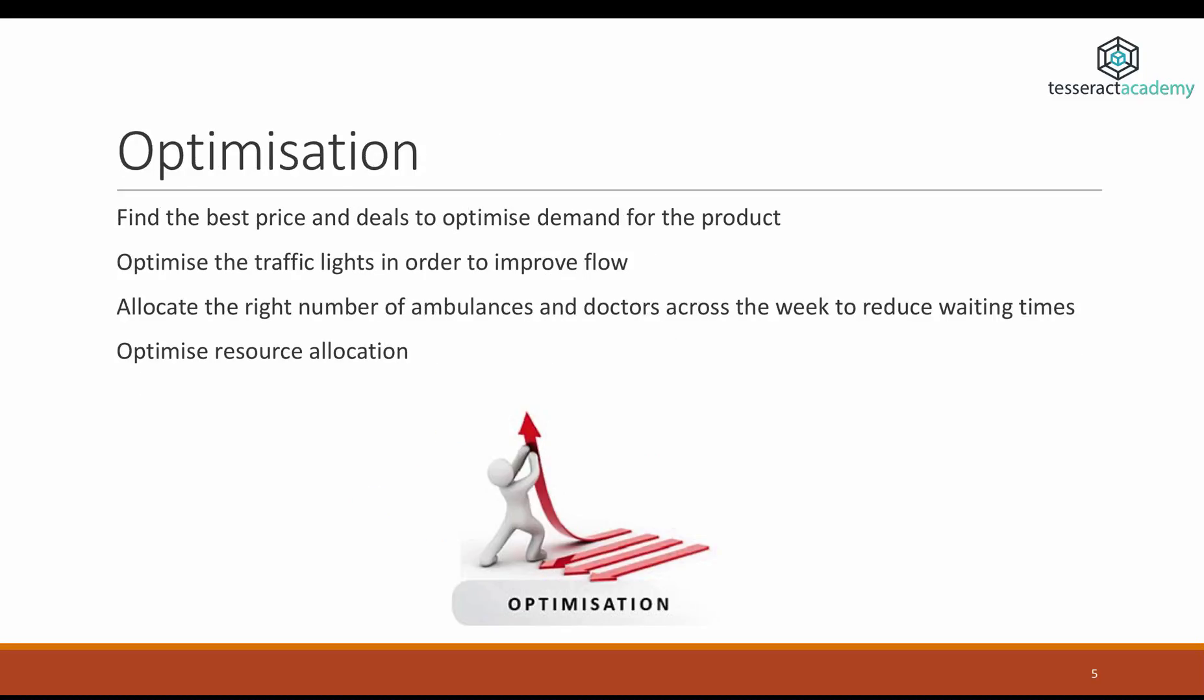So optimization, on the other hand, does not deal with understanding the direct relationship between the number of doctors and nurses and how busy a hospital will be. Optimization algorithms care about finding the optimal values of the parameters, of the things you can change, in order to maximize or minimize an objective. So coming back to the traffic lights example, let's say you have a predictive model of the traffic in an urban environment. An optimization algorithm could help you understand how to best place the traffic lights in order to optimize the flow.